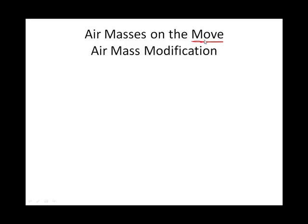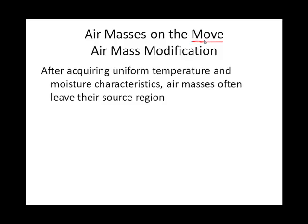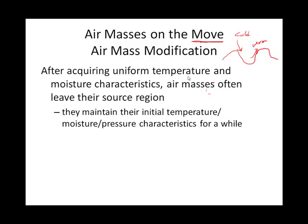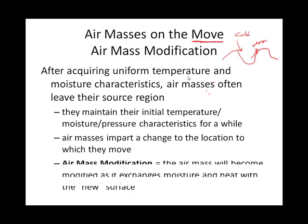Warm air masses that move north in the northern hemisphere, or cold air masses that move south in the northern hemisphere, will be modified. As they are on the move — and they move along with Rossby waves, since that meandering helps transport cold air towards the equator and warm air towards the poles — air masses pick up the characteristics of the land they're moving over. Air masses impart a change to the location they move into, and the air mass will become modified as it gives up some of its moisture or heat.